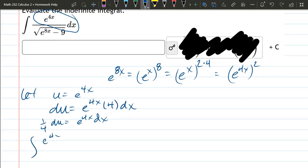So, integral e to the 4x divided by square root. Now, e to the 8x, I'm writing as e to the 4x squared minus 9 is 3 squared.